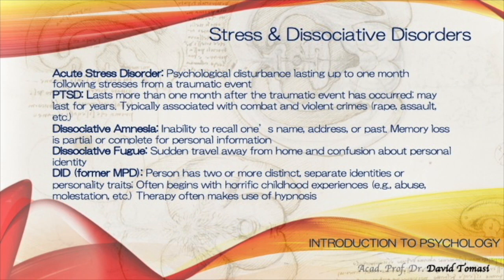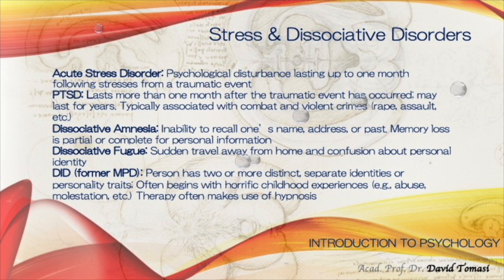Stress and dissociative disorders: acute stress disorder is a psychological disturbance lasting up to one month from a traumatic event. PTSD, or post-traumatic stress disorder, lasts more than one month after the traumatic event and may last for years, typically associated with combat and violent crimes. Dissociative amnesia is the inability to recall one's name, address, or past biographical memories — with memory loss partial or complete for personal information. Dissociative fugue involves sudden travel away from home and confusion about personal identity.